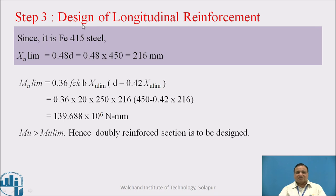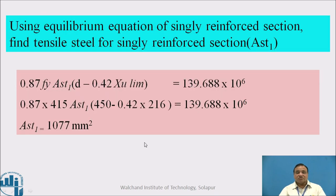Step 3: Design of longitudinal reinforcement. Since Fe415 steel is used, XU limit equals 0.48 D, so we get 216. MU limit is given by 0.36 FCK B × XU limit × (D - 0.42 XU limit). We get 139.688 × 10^6 Newton mm. MU is greater than MU limit, hence a doubly reinforced section is to be designed.